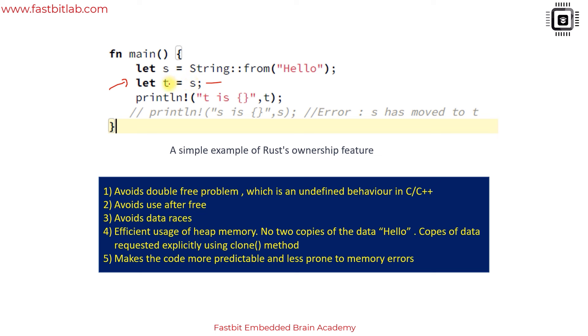This is called move. Here the ownership of s is moved to t, and after this line s is no longer valid. I mean s is kind of uninitialized, so s still exists but it is no longer the owner of this data.